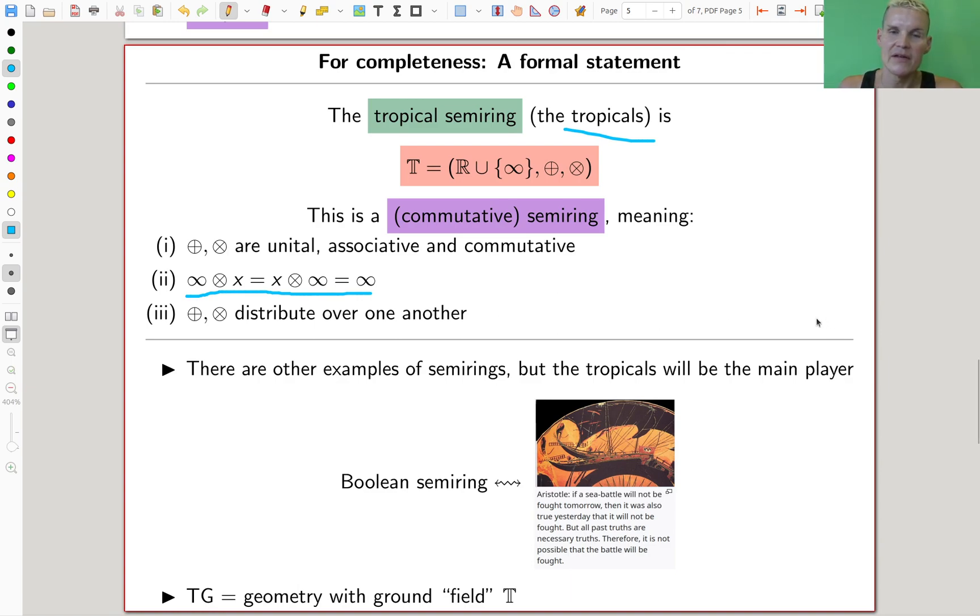And this is what people call a semi-ring, or a commutative semi-ring, because it's unital, associative, commutative. The infinity behaves as you think it would be - it eats everything you throw at it, exactly like the zero. And it distributes over one another. That's kind of the point of having a semi-ring. The most famous example of a semi-ring is actually the boolean semi-ring with truth values, where plus is OR and times is AND, and you only have zero and one, so false and true. You can just write down this type of semi-ring.